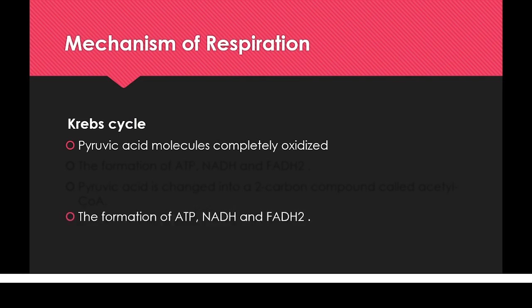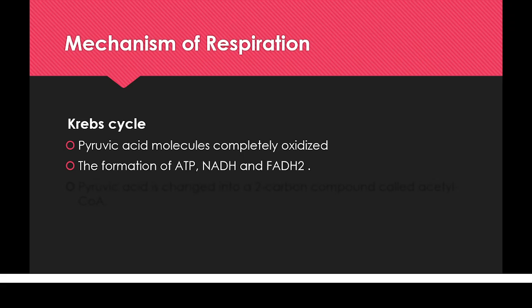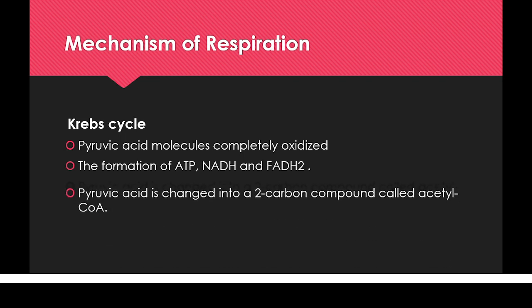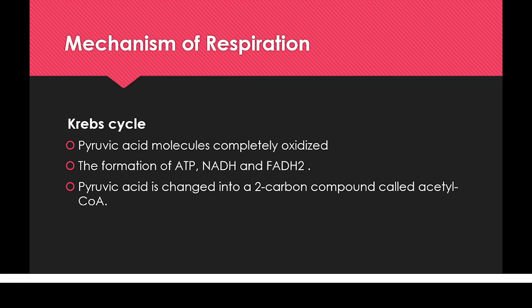During the Krebs cycle, the pyruvic acid molecules produced in glycolysis will be completely oxidized. Before entering the Krebs cycle, pyruvic acid will convert into a two-carbon containing compound known as acetyl-CoA. The glycolysis process occurs in the cytoplasm, producing two pyruvic acid molecules, which then enter and convert into acetyl-CoA before proceeding into the Krebs cycle.